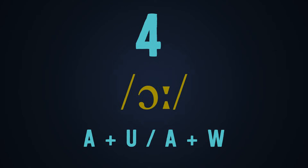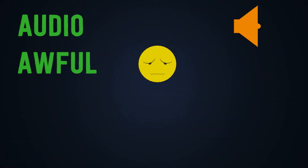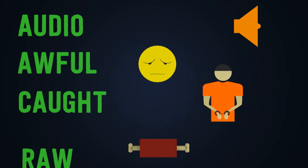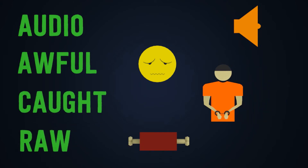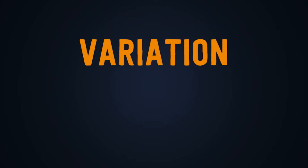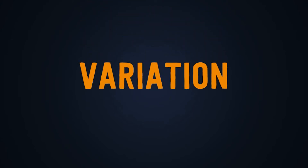Number four: the combination A plus U or A plus W. Take for instance the following examples: audio, awful, caught, raw. When these appear in words, the tendency is to pronounce this combination as 'ɔː'. However, as mentioned, depending on the English dialect and where English is spoken, the 'ɔː' sound in these words can sometimes be substituted by the sound 'ɑː'.